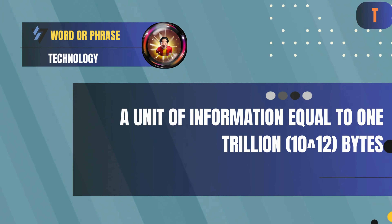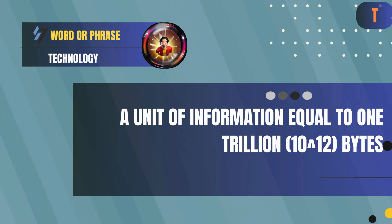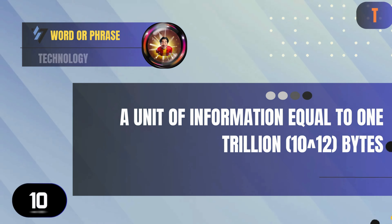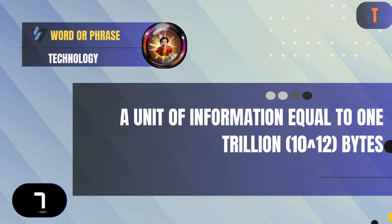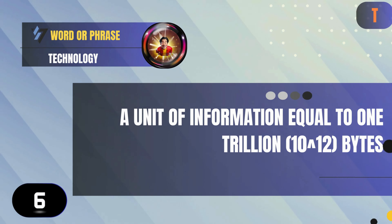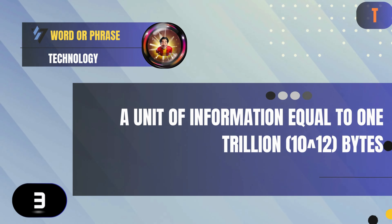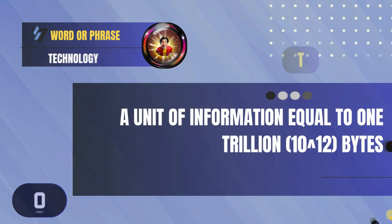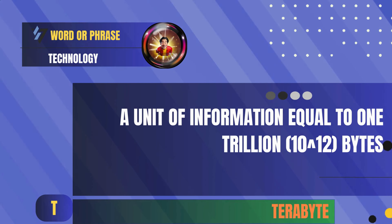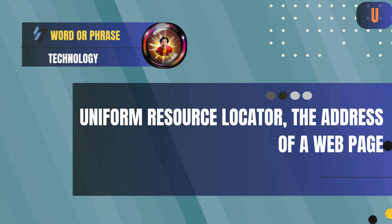T: A unit of information equal to 1 trillion (10 to the power of 12) bytes. Answer: Terabyte. U: The address of a web page. Answer: URL.